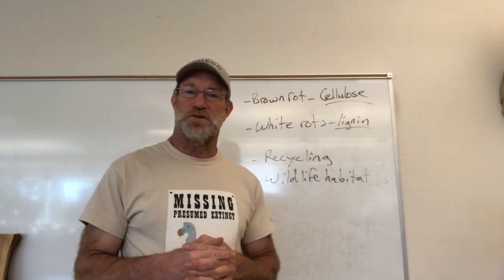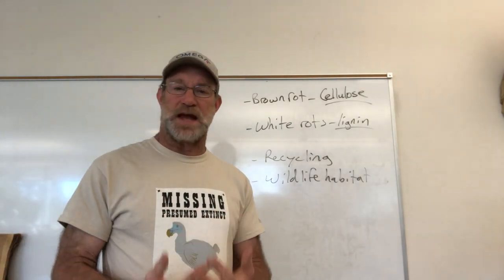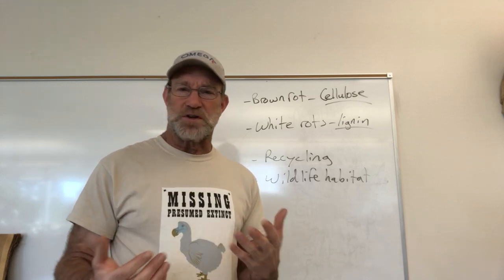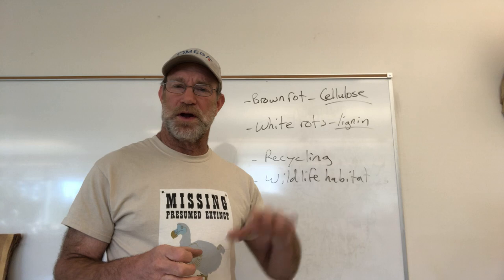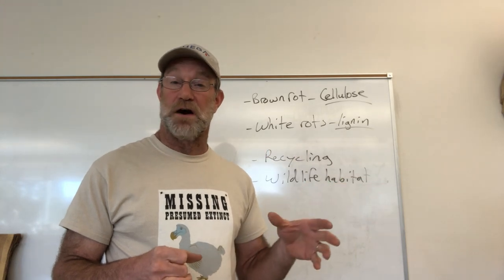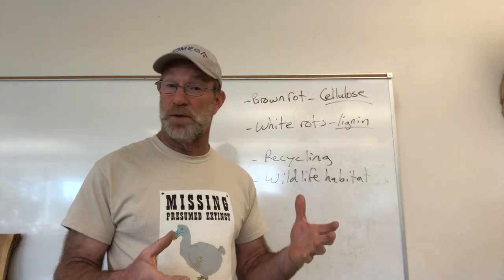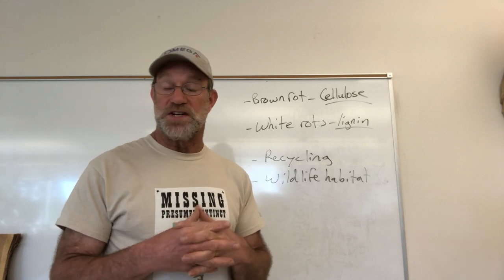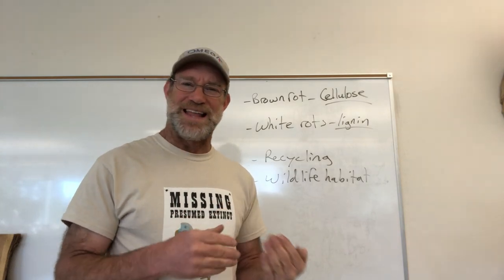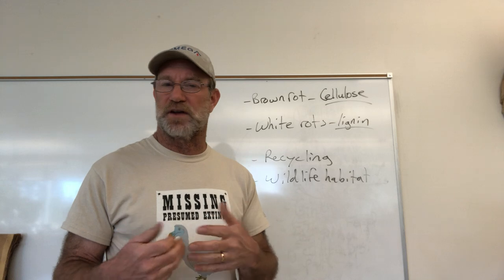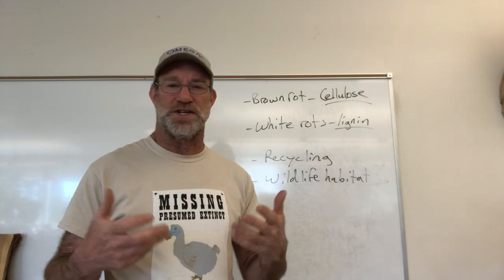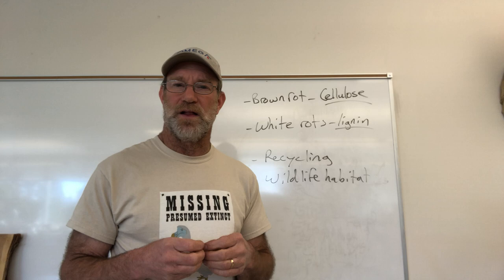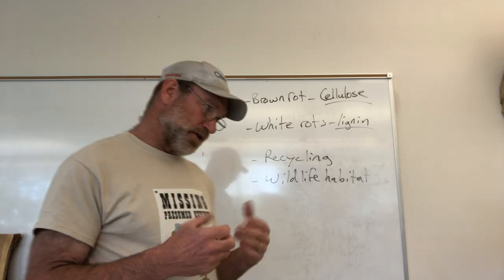Today's lab deals with stem decays, and we've got a couple categories of stem decays: a gross category of heart rots, which feed on the heartwood primarily, although some heart rots are capable of digesting dead sapwood as well, and then the sap rots, which are specifically adapted to digesting sapwood and have little to no effect at all on the heartwood.